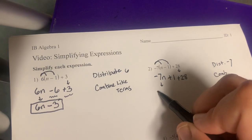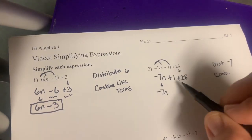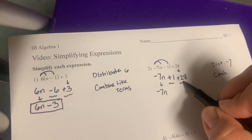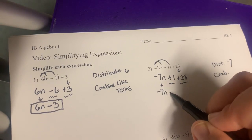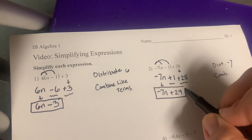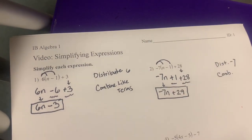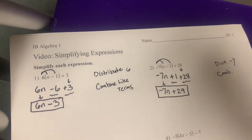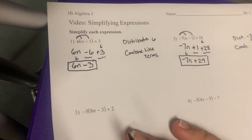Again, I'm going to combine my like terms, and I don't have any like terms with the n, so I'm just going to bring that negative 7n down. And I've got a positive 1 and a 28, so I'm going to bring those together. It's going to be a positive 29. So my final simplified answer is negative 7n plus 29.